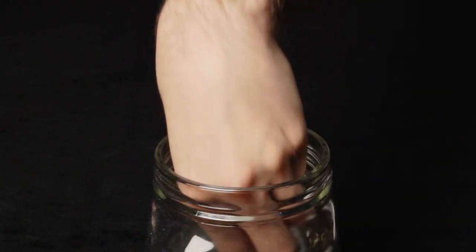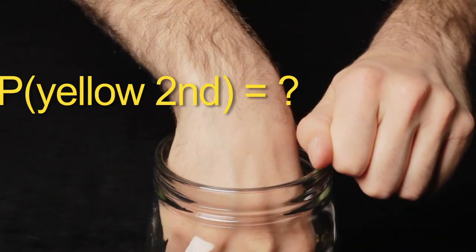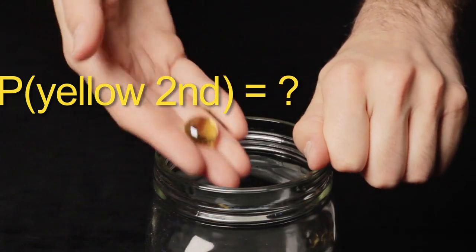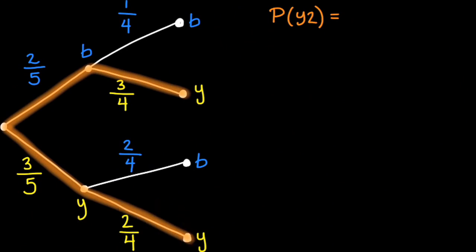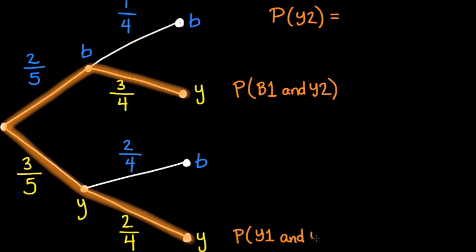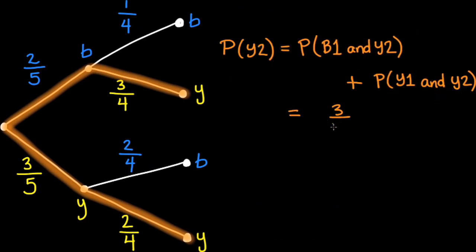What if we don't care about the first marble? We just want to determine the probability that the second marble is yellow. Because it does not matter whether the first marble is blue or yellow, we consider both the blue-yellow and yellow-yellow paths. Adding the probabilities gives us three-tenths plus three-tenths, which works out to three-fifths.